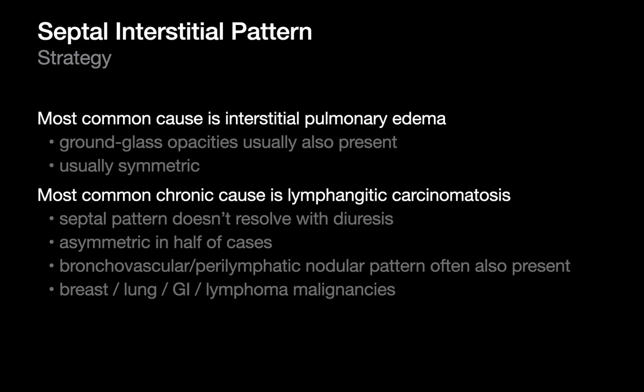The strategy for interpreting a septal interstitial pattern is usually: am I thinking pulmonary edema or lymphangitic carcinomatosis? If it's alveolar hemorrhage or PAP, you're interpreting it as a ground glass or consolidation case. When all you see is a septal interstitial pattern, it's a decision between interstitial edema and lymphangitic carcinomatosis. Ground glass opacities and symmetry will nudge you toward pulmonary edema. Asymmetry, a coexisting nodular interstitial pattern, or a history of breast, lung, GI cancer, or lymphoma will nudge you toward lymphangitic carcinomatosis.